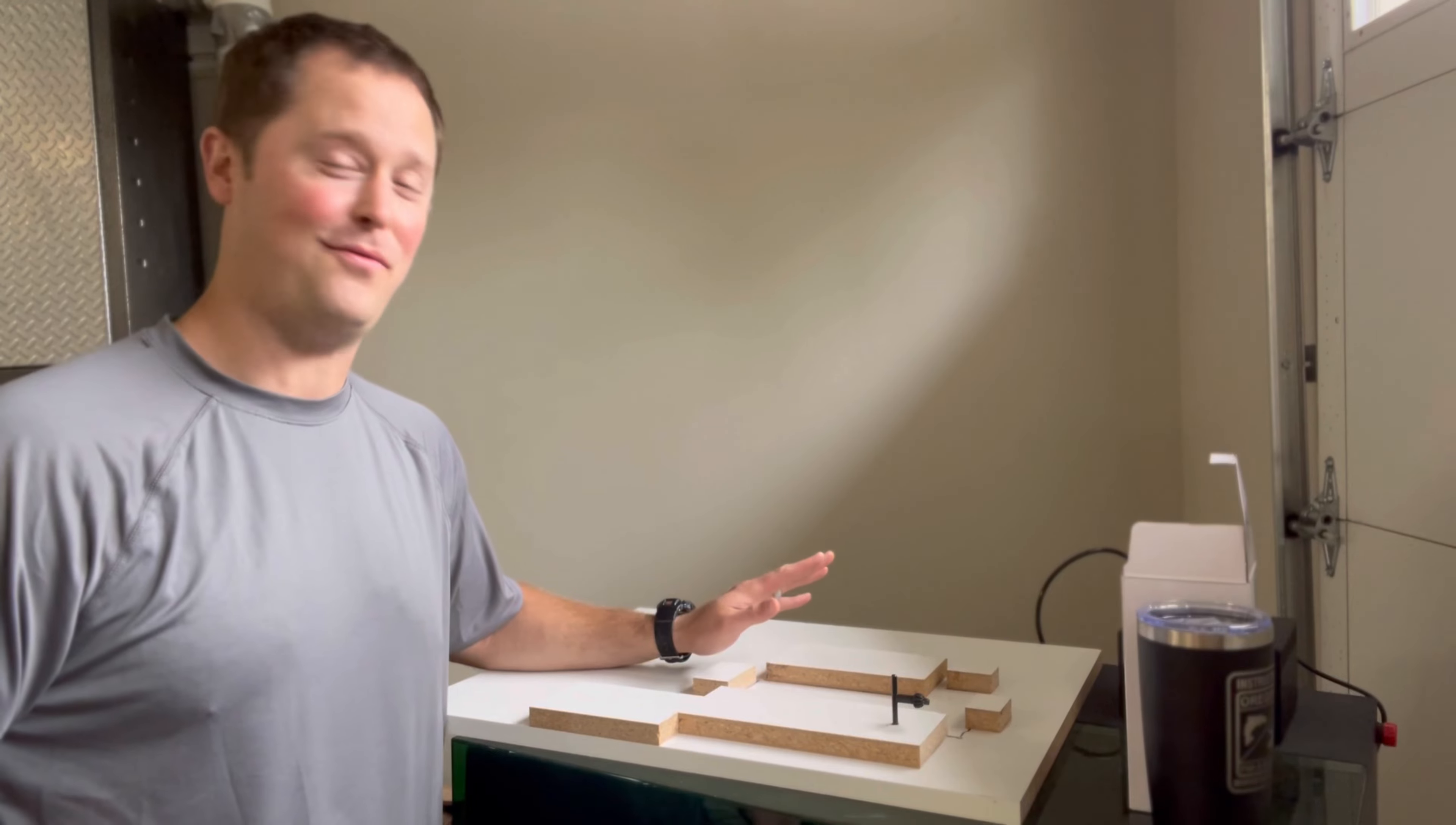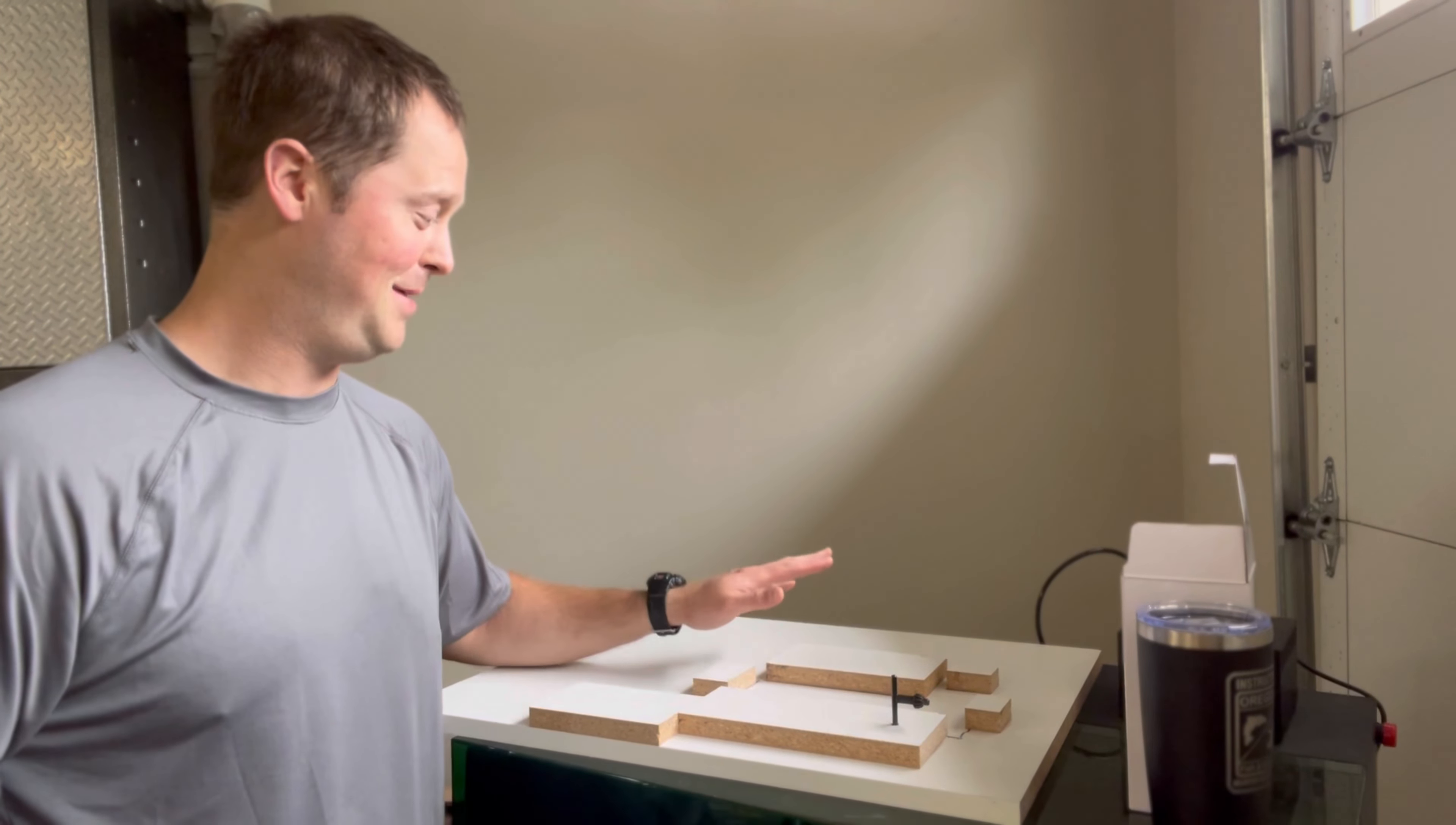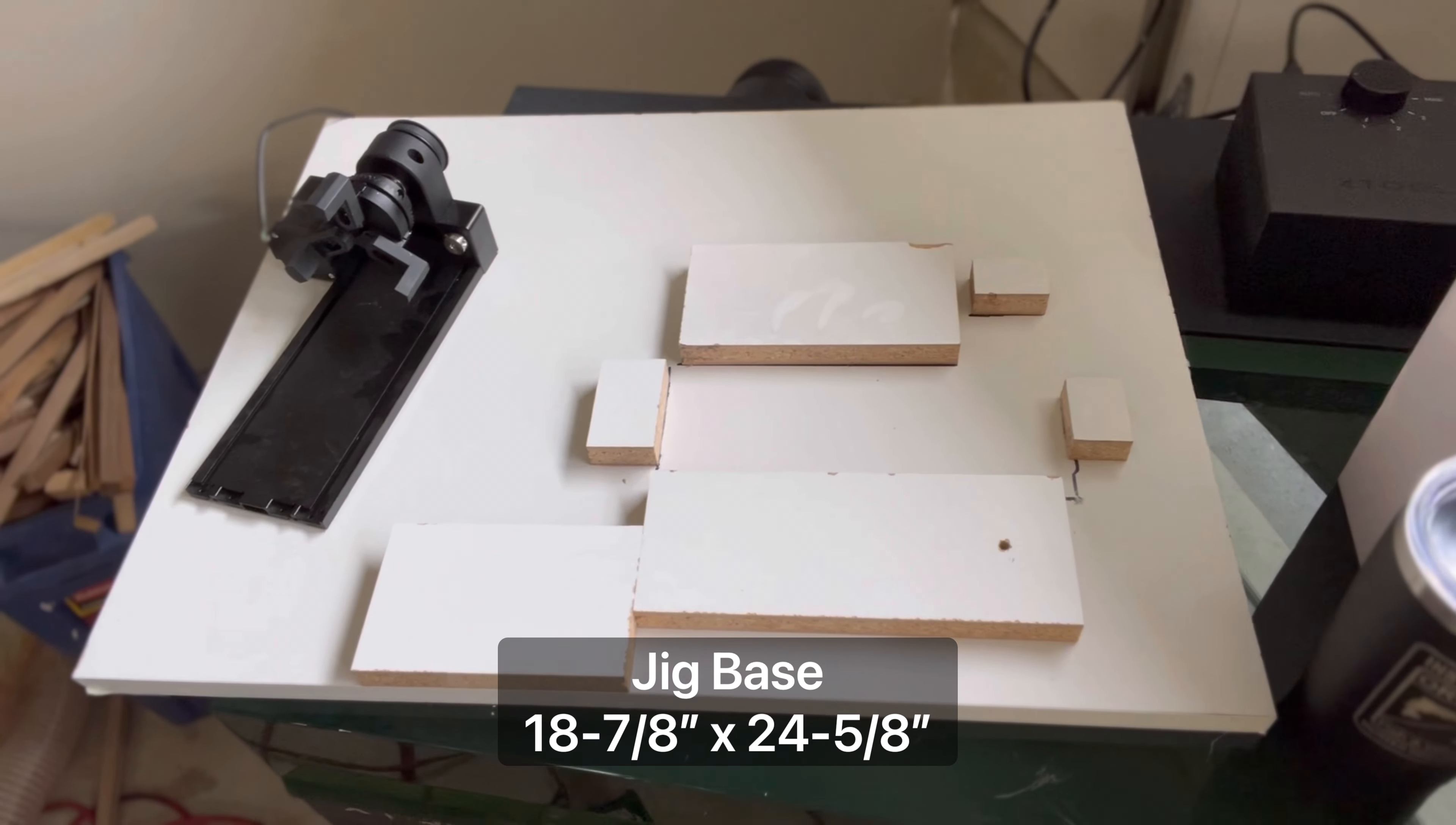Now the first thing you got to do before you make any tumbler is you obviously have to get the laser, get this rotary attachment, but make sure you build a jig. Make life easy for yourselves. Here's an overhead look at how my jig looks.